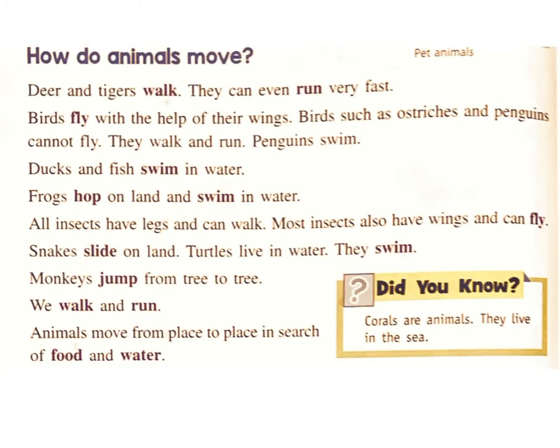How do animals move? Deer and tigers walk, and they can even run very fast. Birds fly with the help of their wings. Birds such as ostriches and penguins cannot fly — they walk and run. Penguins swim. Ducks and fish swim in water. Frogs hop on land and swim in water. All insects have legs and can walk. Most insects also have wings and can fly.